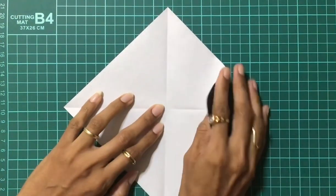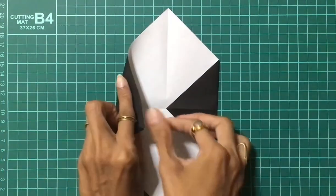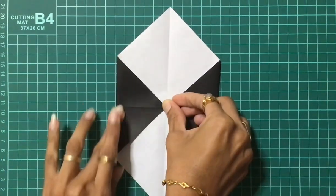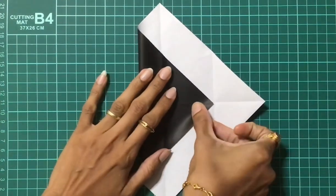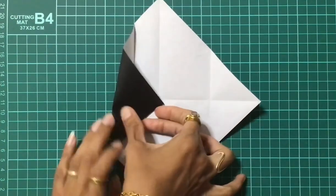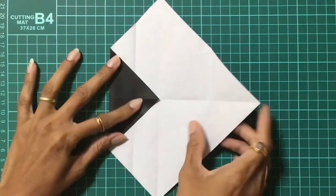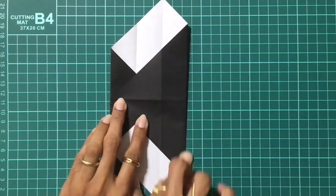Now bring these two tips to the center point, then make the creases. Open the flap, bring this tip to this point, then make a crease. Repeat the same thing on the other side too, bring this tip till this point and make a crease.